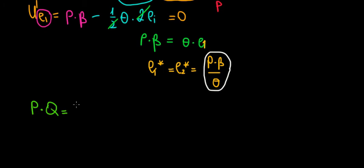Price times quantity produced is beta multiplied by the effort levels. We have the optimal effort level multiplied by two because the effort levels are symmetrical. P times beta divided by theta is the effort of each worker, so we multiply by two.